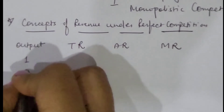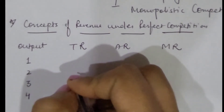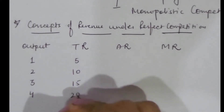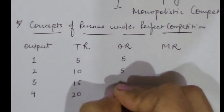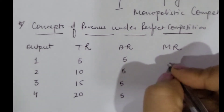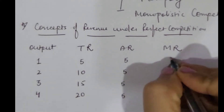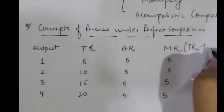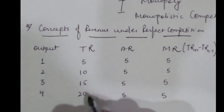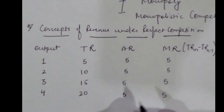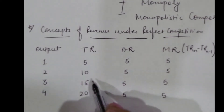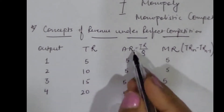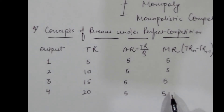If we are selling one, two, three, or four units of output, then total revenue increases at a uniform rate because average revenue or price is the same — there is a uniform price in perfect competition. Marginal revenue is total revenue of the nth term minus total revenue of the (n-1)th term, so these gaps are again five. Average revenue, which is total revenue divided by quantity, is five — same as marginal revenue.